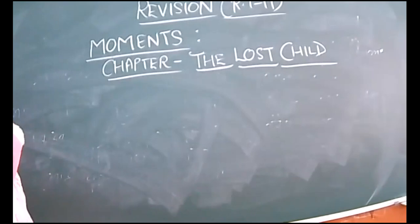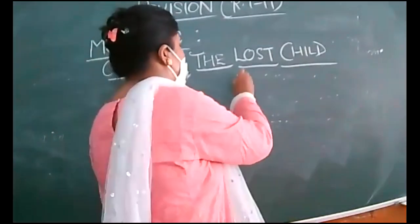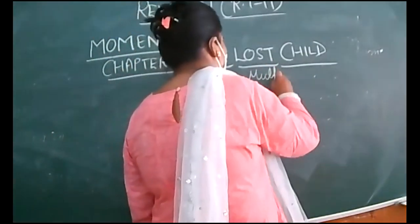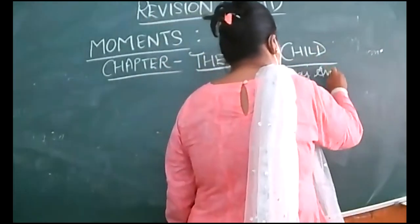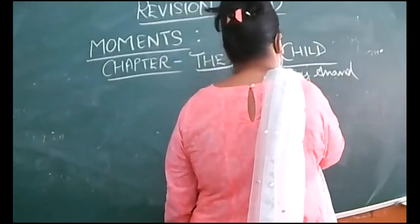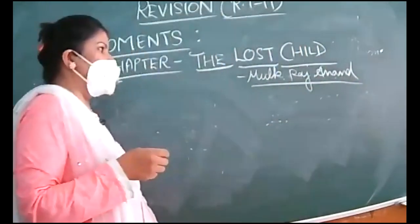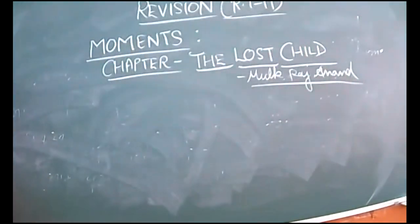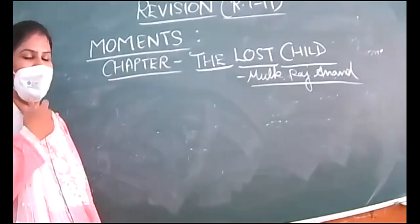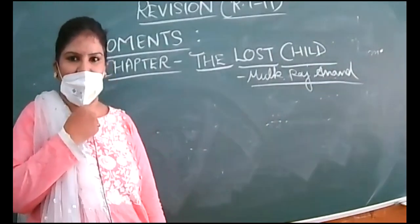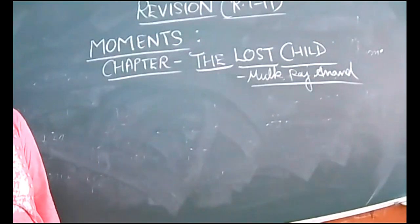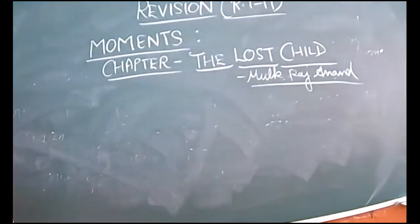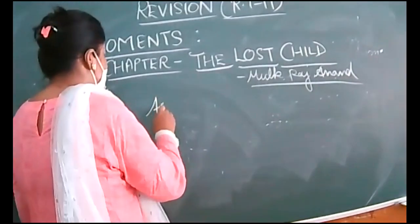First of all, who has written this chapter? Mulk Raj Anand. You should know the names of authors, not only poets. He is an Indian writer, Mulk Raj Anand, who is known for projecting Indianness into his works. The basic theme of this chapter, The Lost Child, is the aspirations and demands of a child.